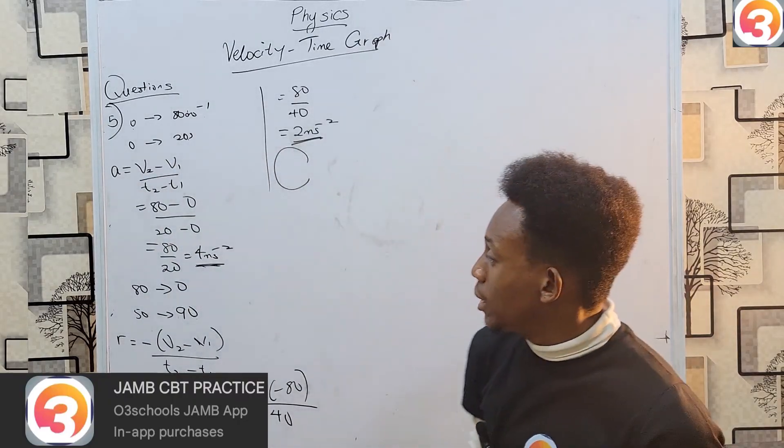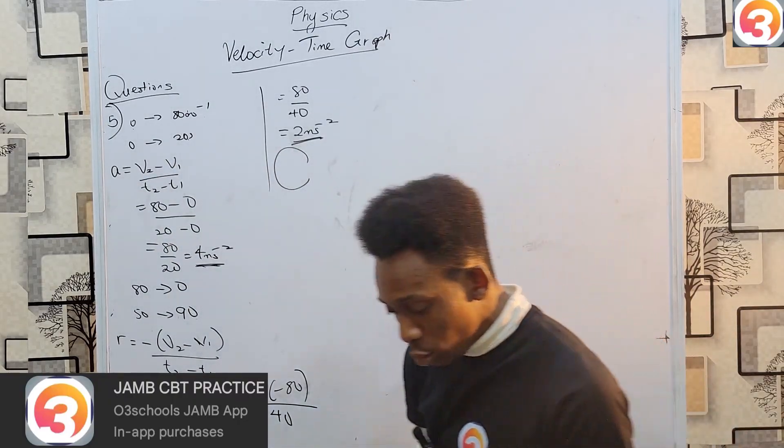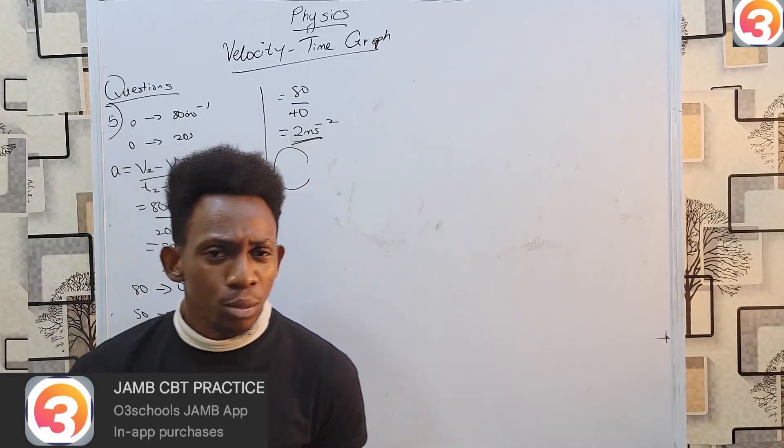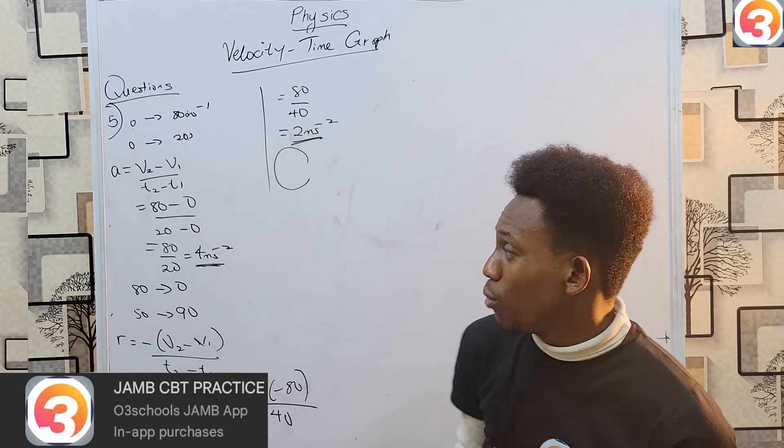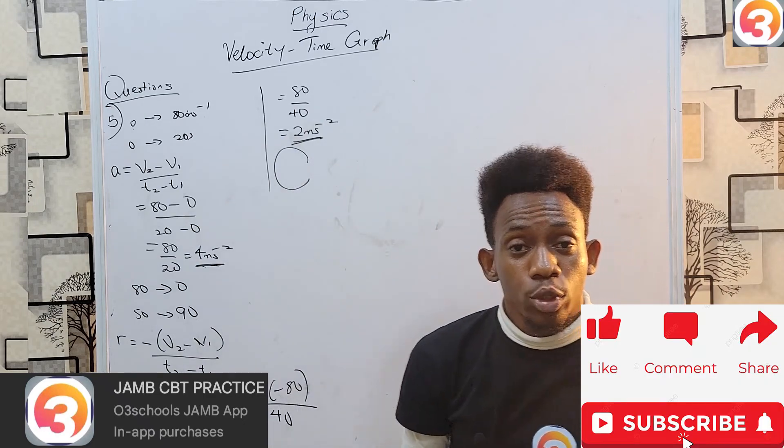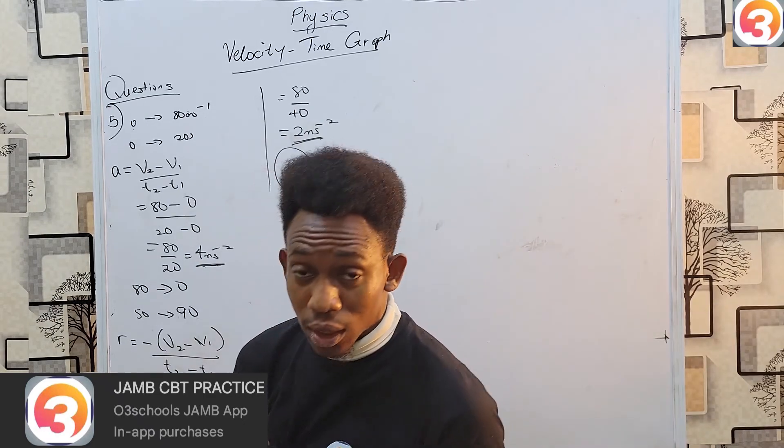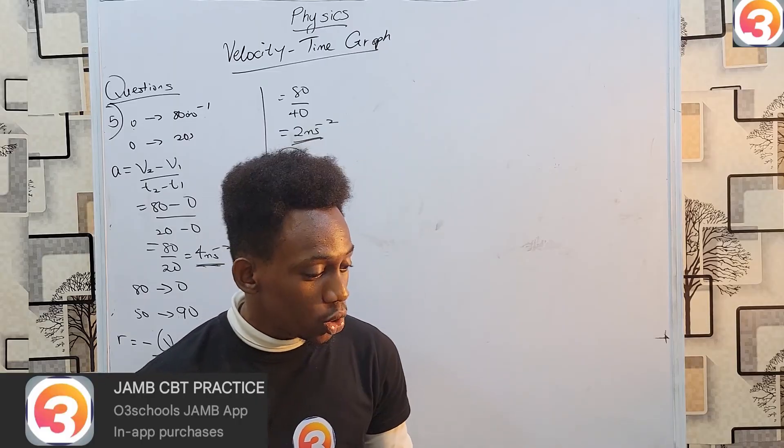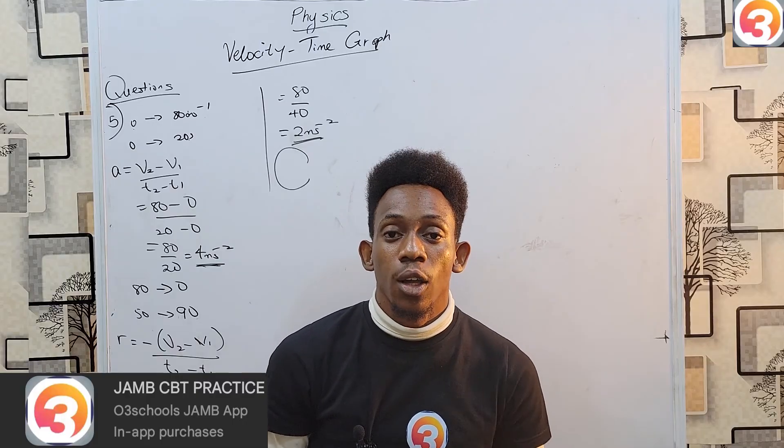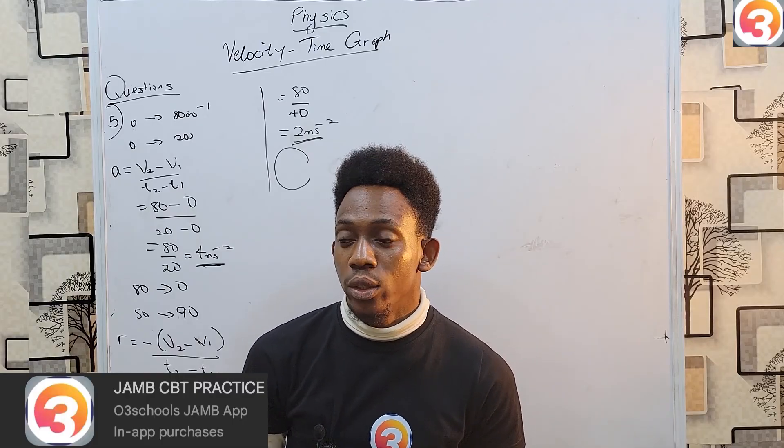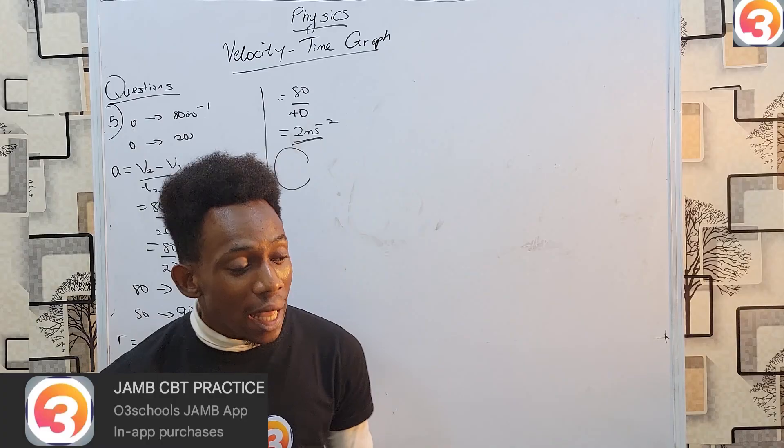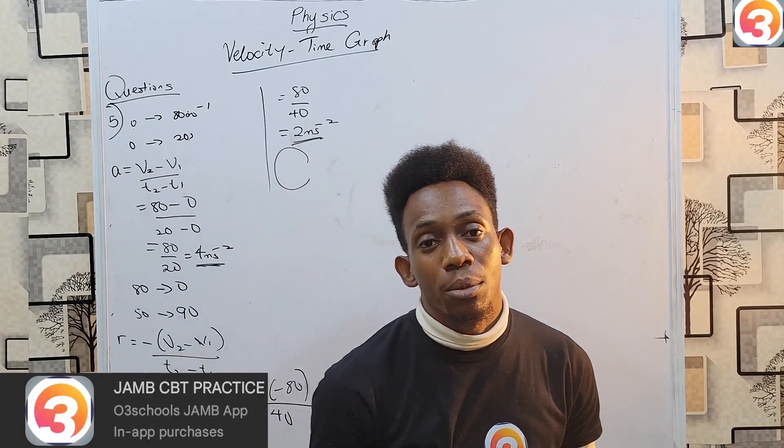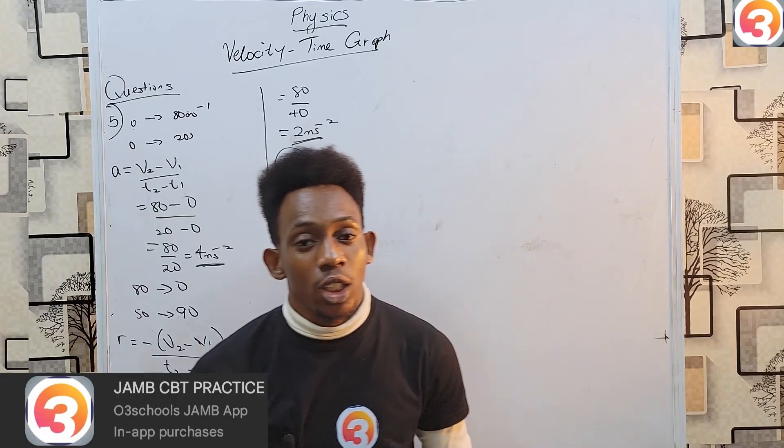Quite easy. And with that, we've come to an end of this class on velocity time graph. Very very simple topic. I will truly learn how to solve this. Remember, our class was brought to you by O3Schools. Please go to JAMB App, activate, and gain access to all the features. Remember also to subscribe to this channel for more videos and tutorials on all your different subjects and topics that will help you as you prepare for your JAMB. Thank you very much. My name is Axelacious.